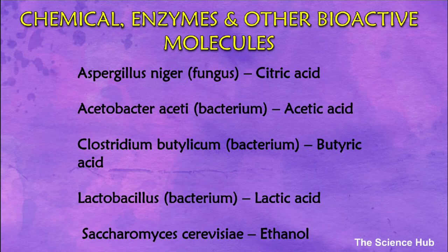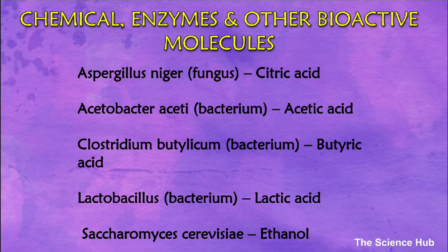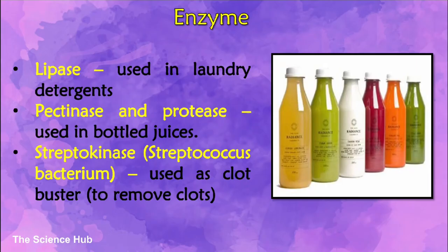Chemical substances, organic acids, enzymes, and other bioactive molecules are commercially produced by microbes. Aspergillus niger is used in making citric acid; Acetobacter aceti is used in making acetic acid; Clostridium butylicum is used in making butyric acid; Lactobacillus is used in making lactic acid; Saccharomyces cerevisiae is used in making ethanol. Lipase is used in laundry detergents; pectinase and protease are used in bottled juices; streptokinase from Streptococcus bacteria is used as a clot buster to remove blood clots.